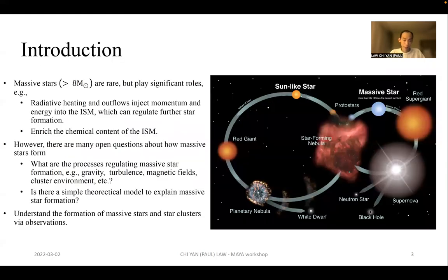Massive stars, which have mass at least eight times heavier than the sun and are rare, play a significant role. In the earlier stages, the radiative heating and outflow inject vast amounts of momentum and energy into the interstellar medium, which can regulate further star formations across multiple scales. The vast rich chemistry also enriches the chemical content of the interstellar medium.